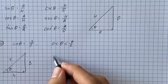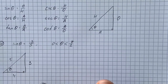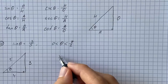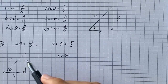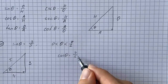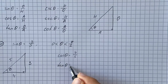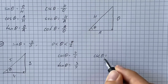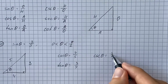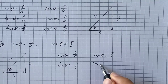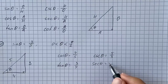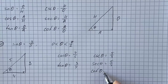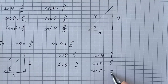Now I'm going to find all trig values. Cosine of theta is adjacent over hypotenuse, so that's four-fifths. Tangent of theta is opposite over adjacent, which is three over four. Cosecant of theta is the flip of sine, so five over three. Secant of theta is the flip of cosine, so five over four. And cotangent of theta is the flip of tangent, which is four over three.